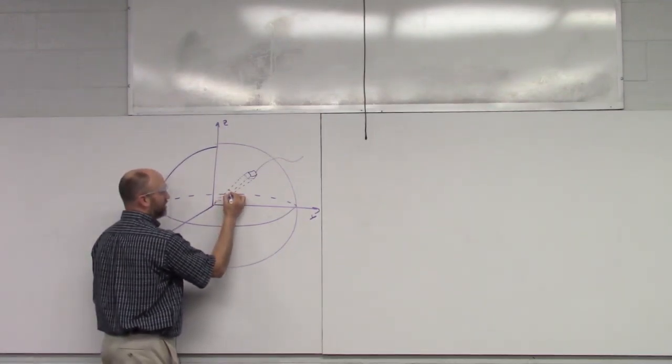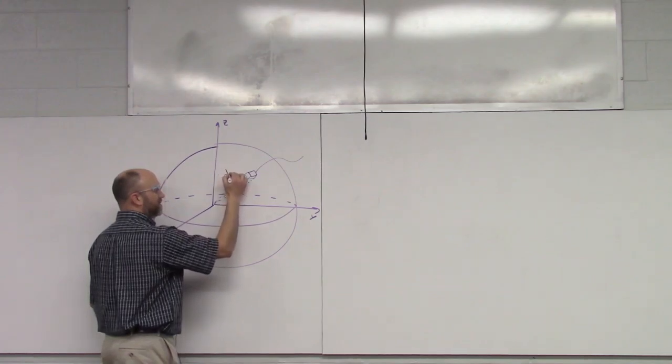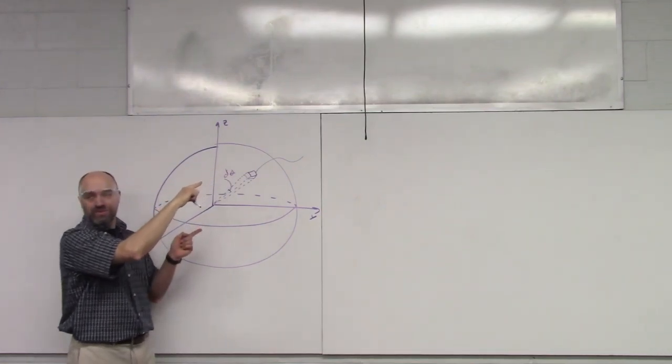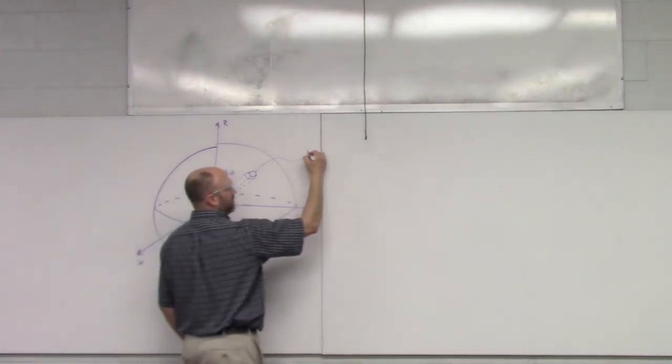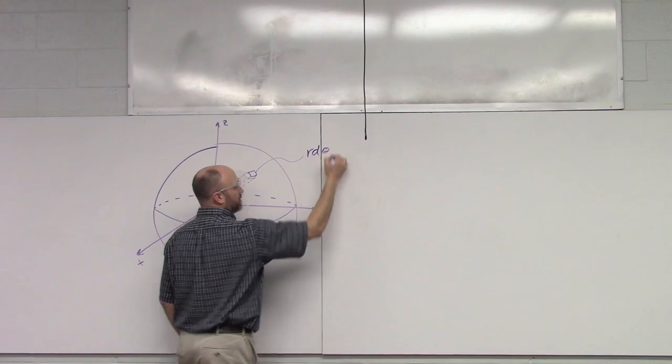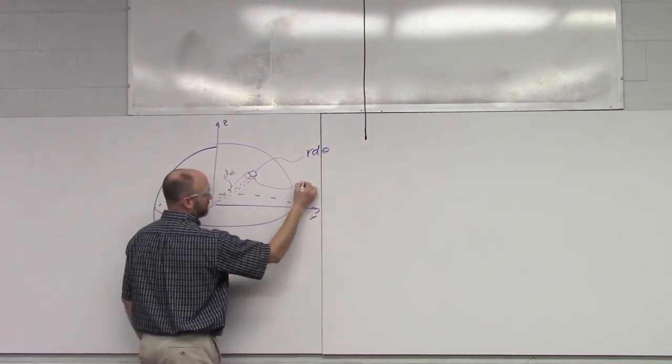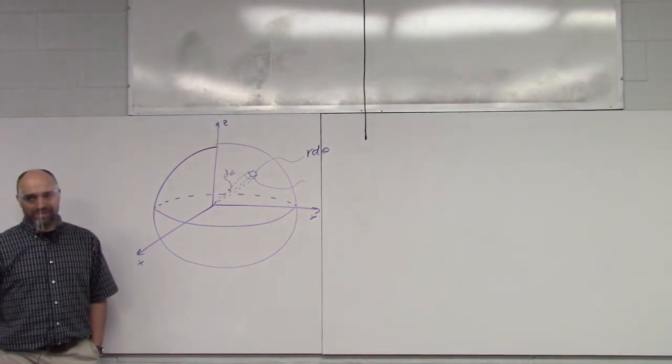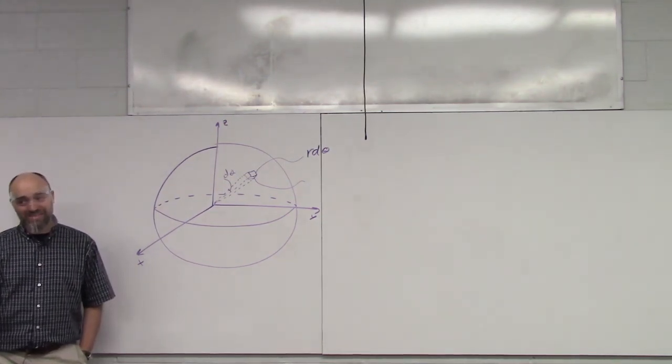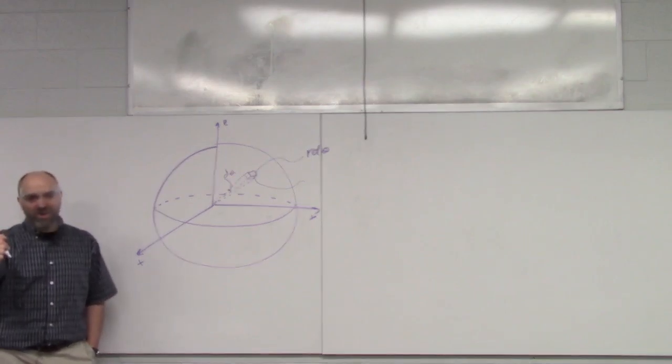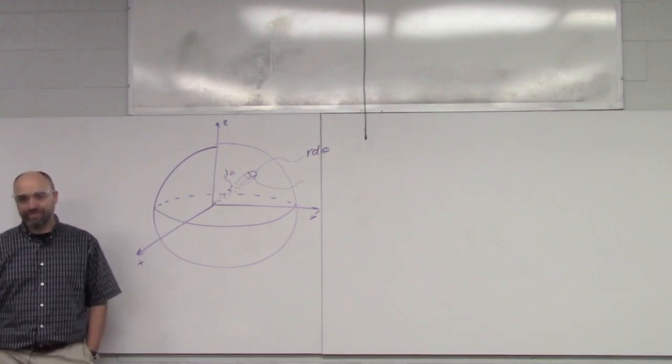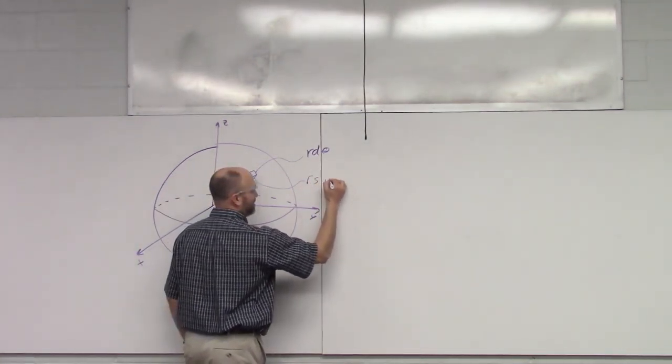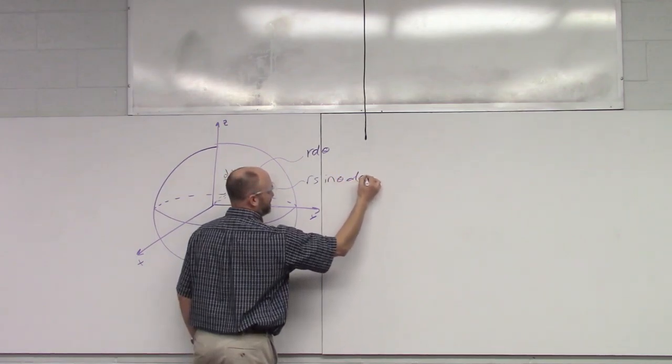But, so here's your dTheta here. But then to get that arc length, you need to multiply it by the radius, right? So it's r dTheta. And then this one was the horribly hard one. Do you remember what that one was? r dTheta? That's what your gut wants to say. I look at that and I say, yes, r dPhi. But no, that's wrong.